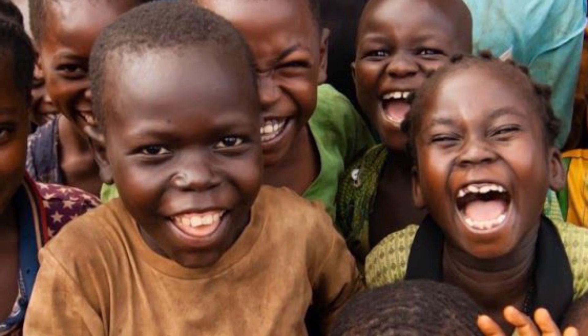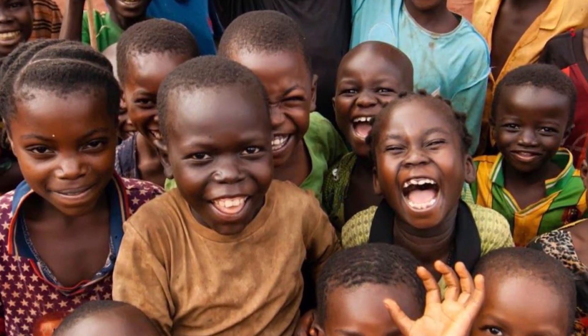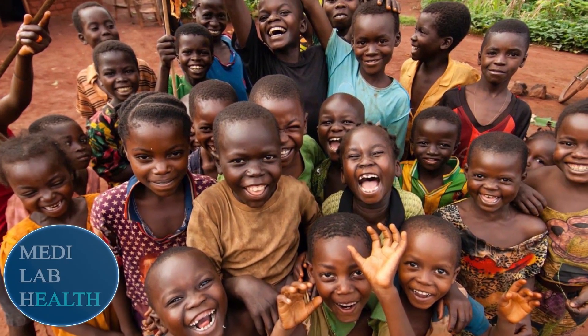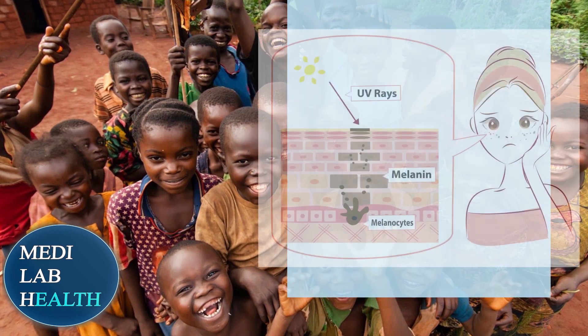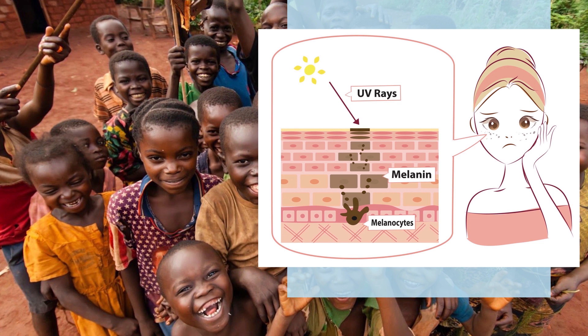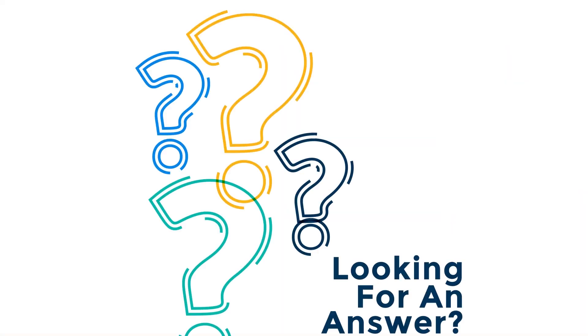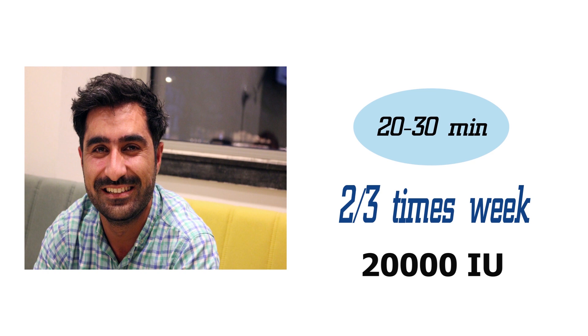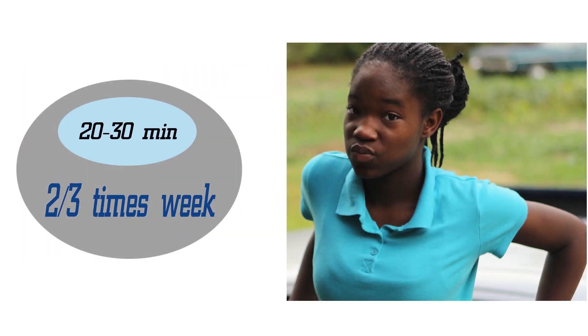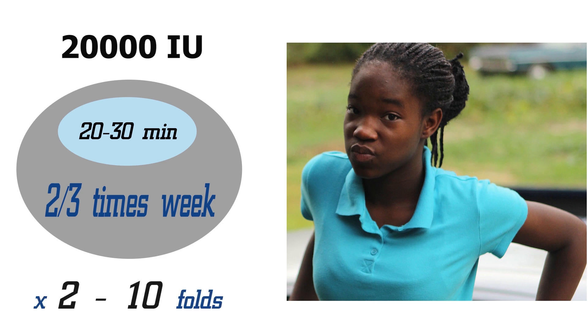Dark-skinned peoples have higher melanin levels in their skin than light-skinned peoples. Melanin has a photoprotective action that protects the skin from the harmful effects of ultraviolet radiation. Melanin pigmentation in the skin competes for ultraviolet B photons and thereby decreases the efficiency of vitamin D photosynthesis. It has been reported that for light-skinned peoples, an exposure time of 20 to 30 minutes, two to three times a week, is enough to produce around 20,000 international units of vitamin D3. For dark-skinned peoples with high melanin levels, this exposure time increases two to tenfold to achieve the same level of vitamin D.